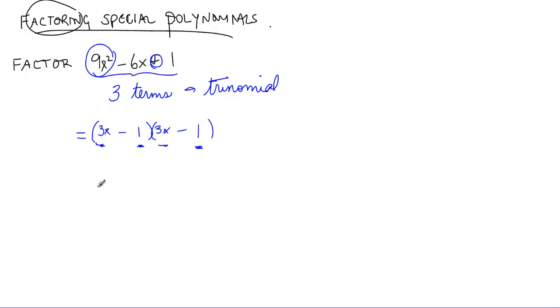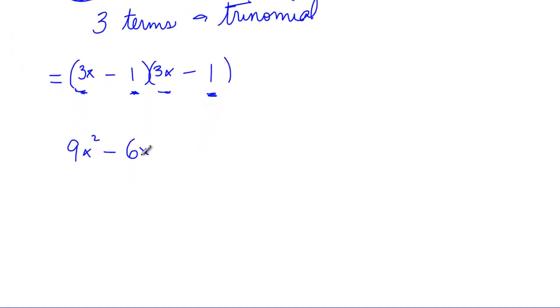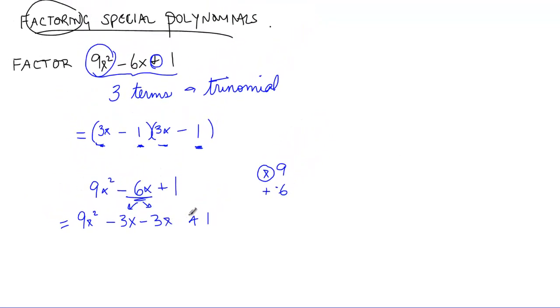Now that said, there's another way to factor this that you also know called method of decomposition. Method of decomposition takes the original trinomial, takes this middle term, and splits it into two pieces. The two pieces, we know if I go 9 times 1, they have to multiply to make that 9 and have to add to make that negative 6 in the middle. In other words, I'm going to split that 6x like so.